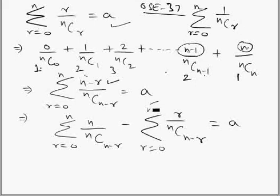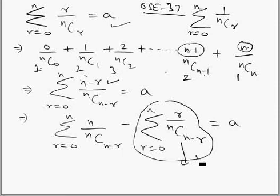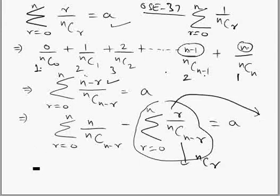You can see this is same as... nC(n-r) can be written as nCr again. So this is same as the given expression r over nCr. This again becomes r over nCr, so we combine this term with this term.